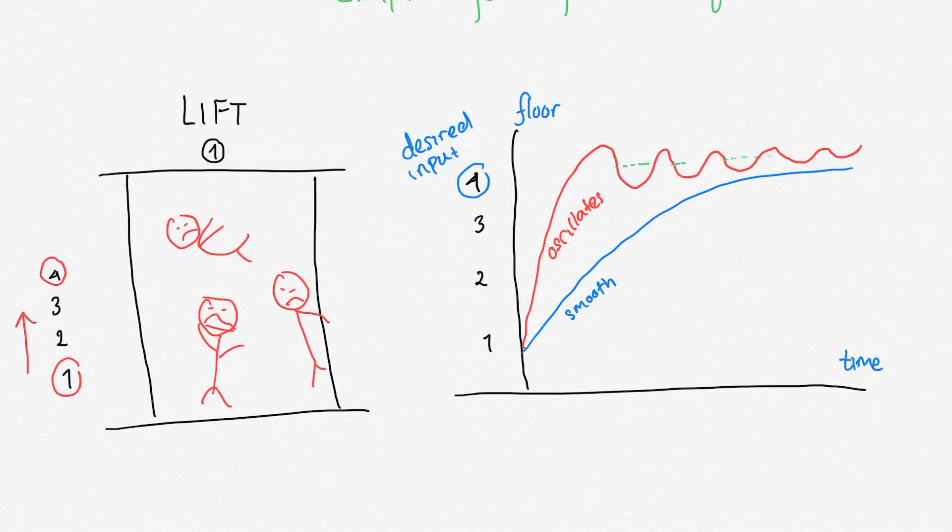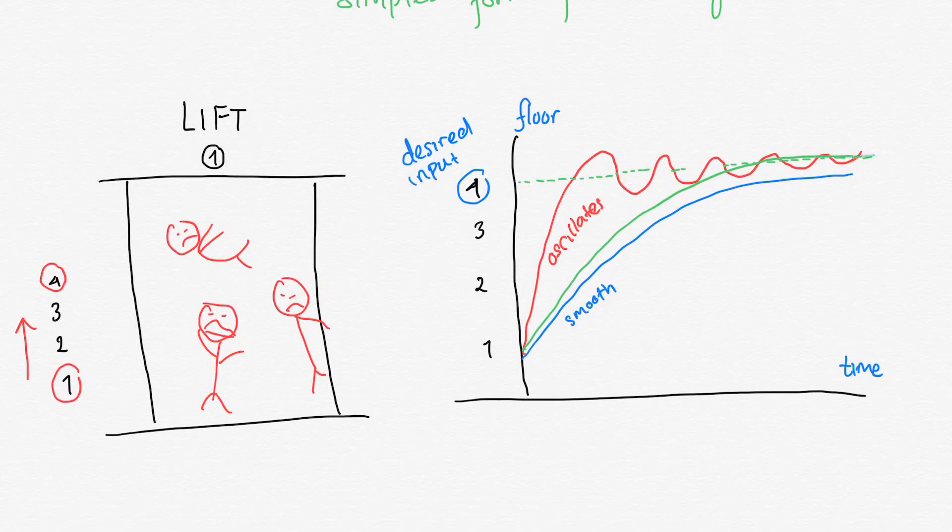And finally, the third curve is the ideal response. Why is it ideal? Because there is hardly any steady state error there. No matter how smooth your elevator moves, if you want to move to the fourth floor and it stops at third, that's no good. We need to move to the fourth floor.